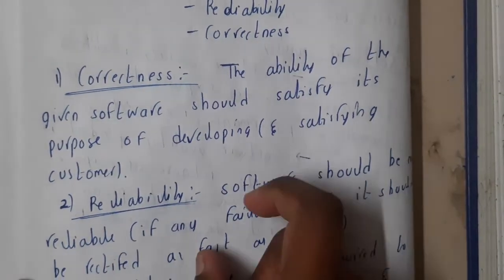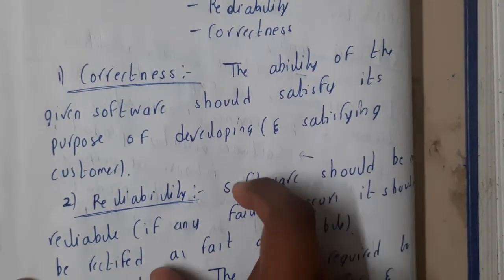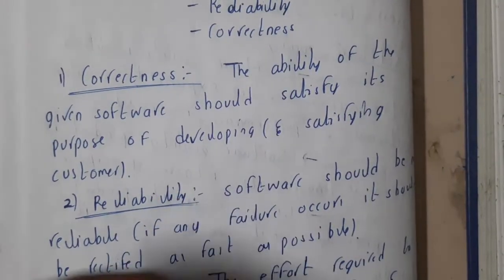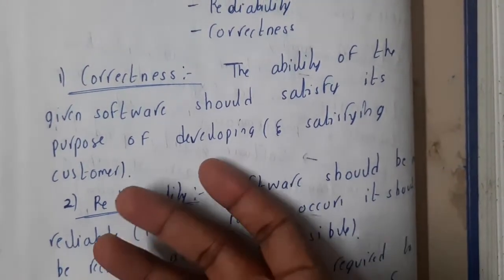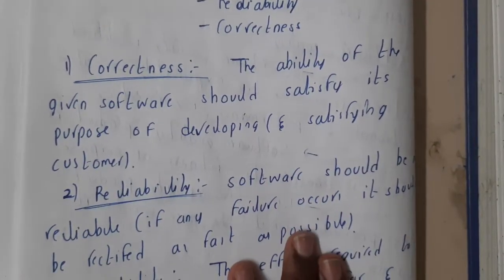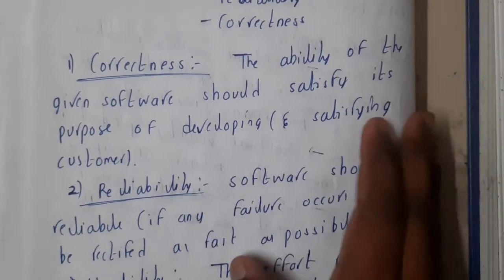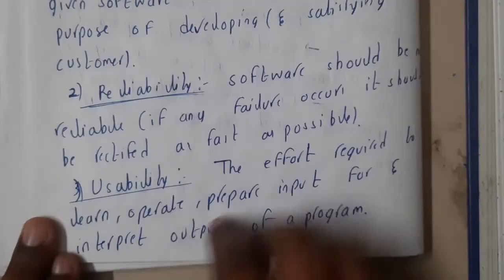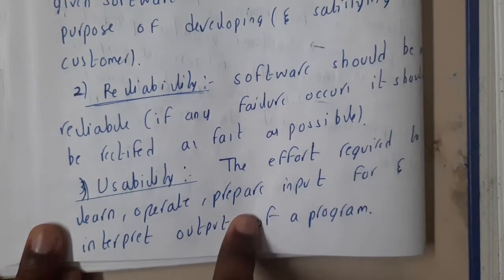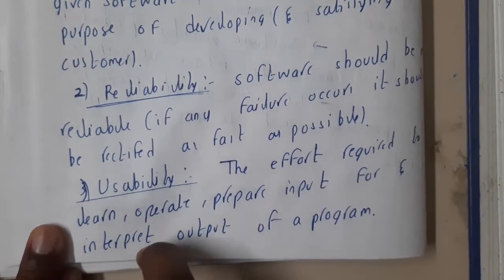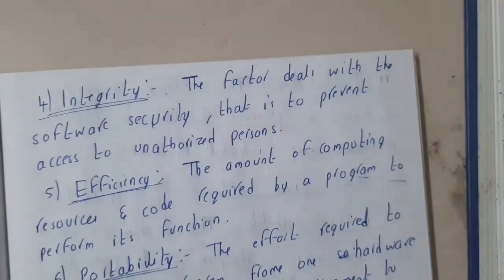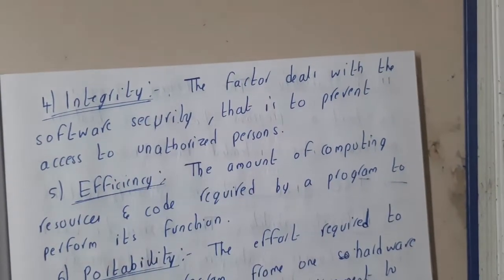Similarly, reliability means the software should be much more reliable. Whenever any failure occurs, the software should not go down, or if it even goes down it should be resolved as fast as possible. Usability is the effort required to learn, operate, and prepare input for the particular output.